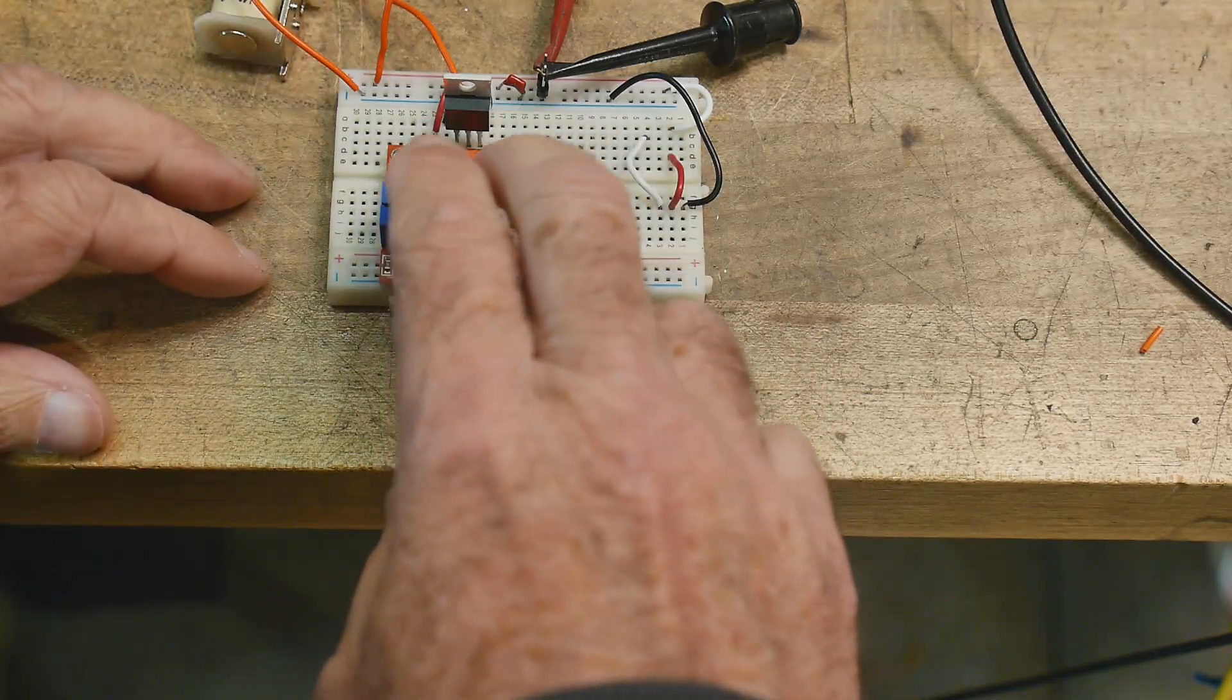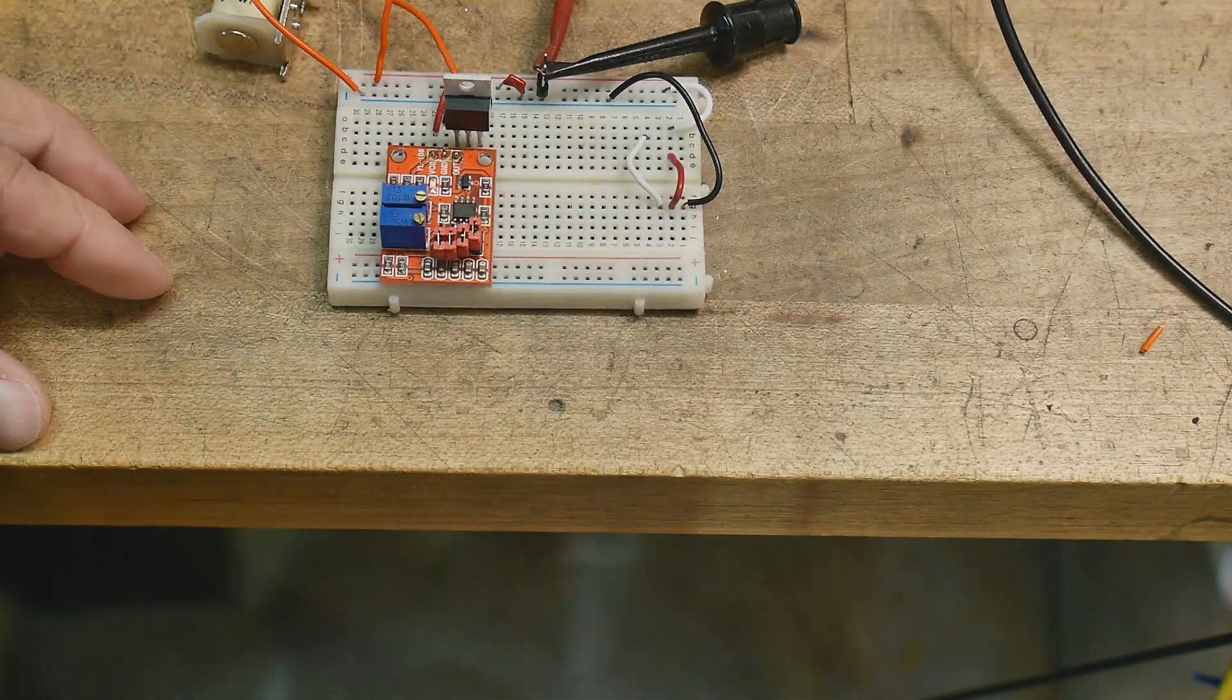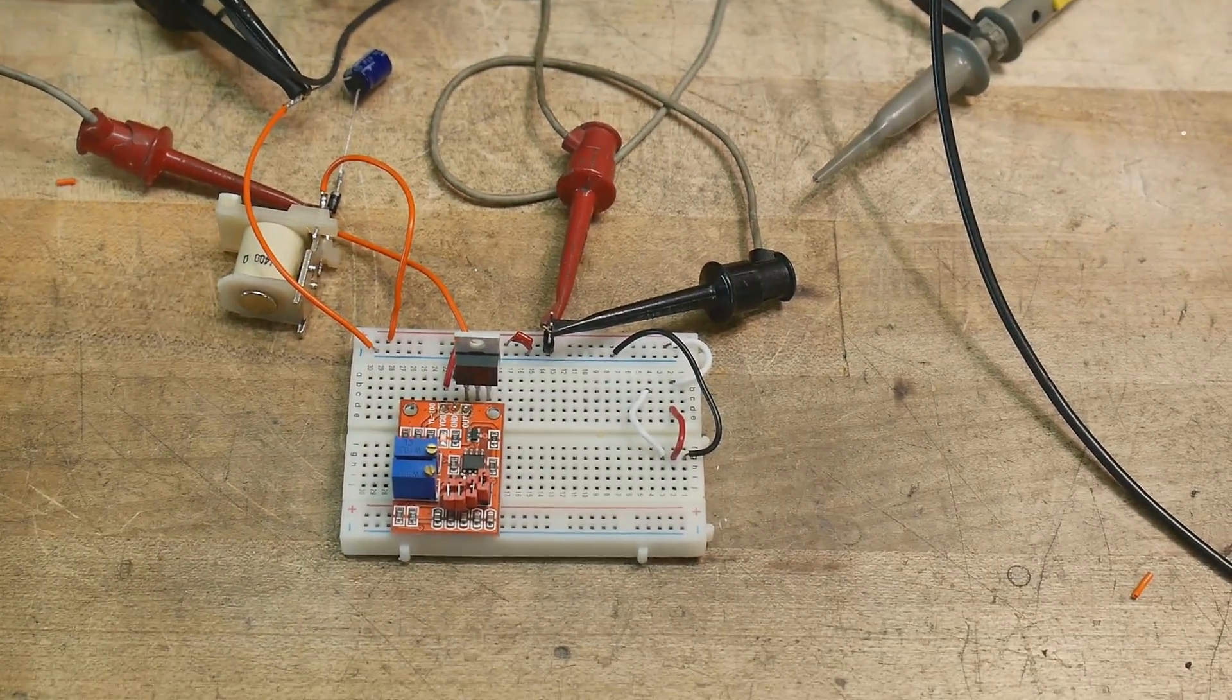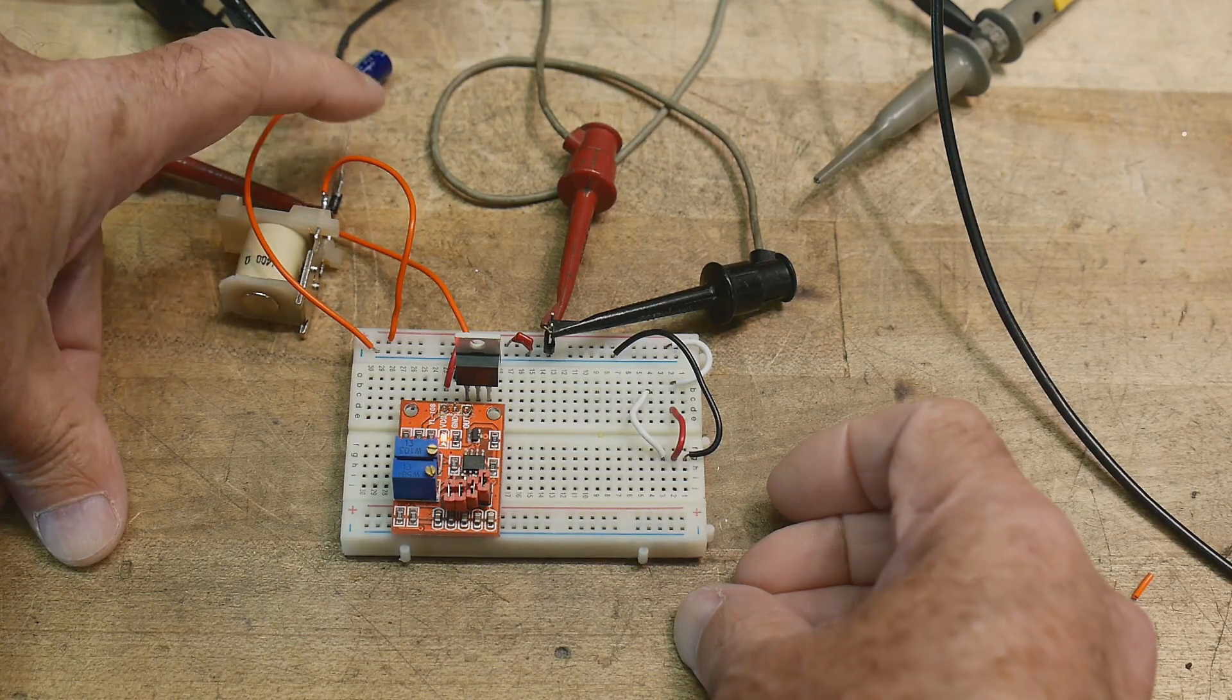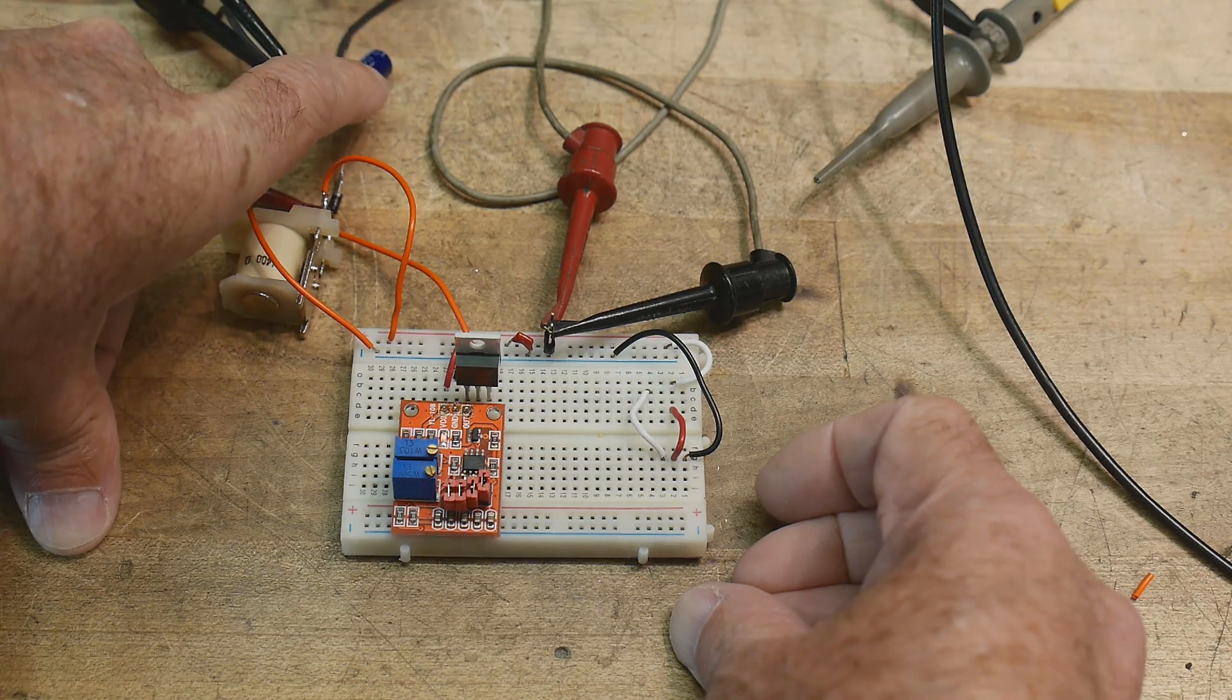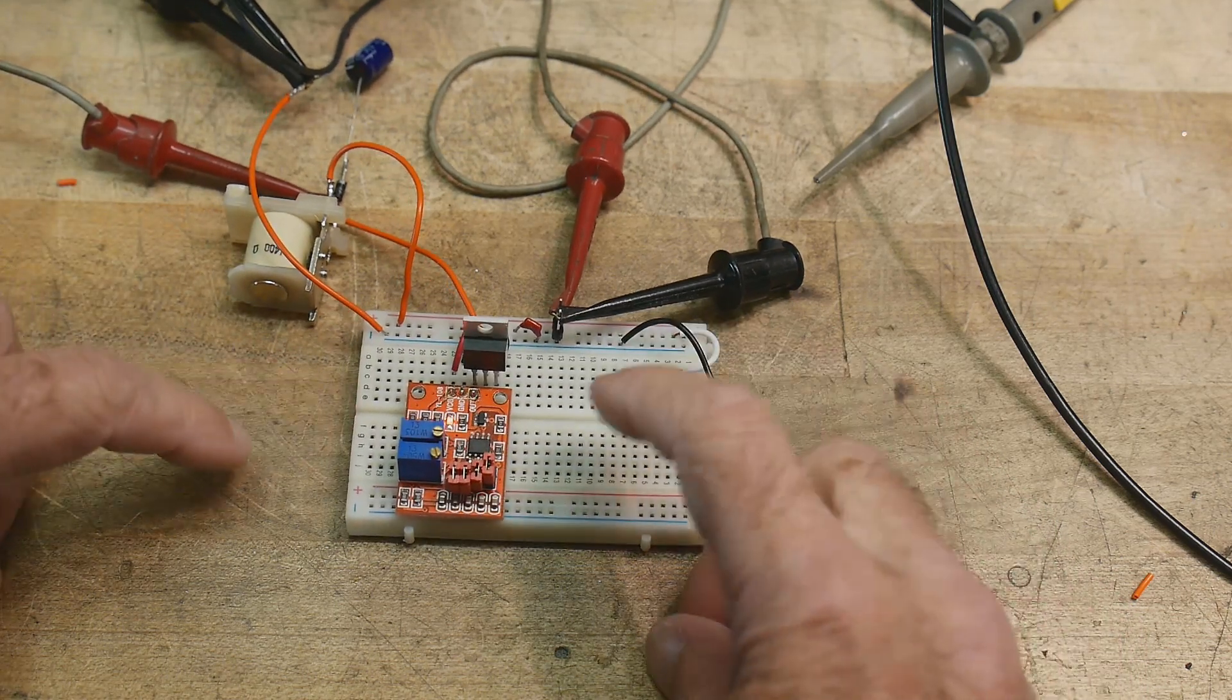So we'll hook this one up, and I've got an N-channel FET here, and then up here we've got the inductor and diodes down there, and here's the capacitor, and so it's whacking on and off.